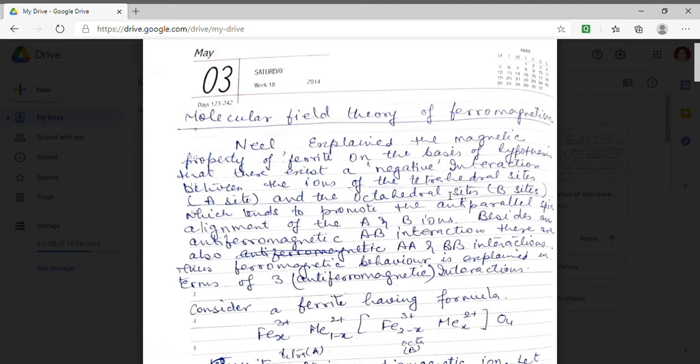Now along with this A-B interaction there are two more interactions and that are interaction of A spins of A site. Similarly the spins of B they also interact with the other spins of the same site. That means there are three interactions A-B, A-A and B-B interaction.